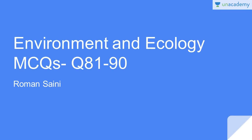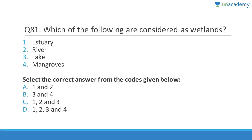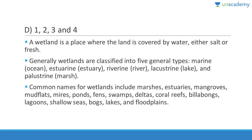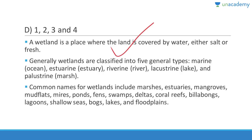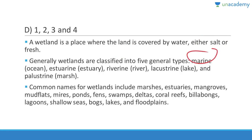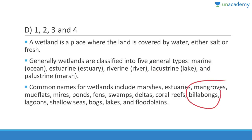Questions 81 to 90. Question 81: Wetlands include estuaries, rivers, lakes, and mangroves. A wetland is a place where land is covered by water, either salt or fresh. There are five types: marine (ocean), estuarine (estuary), riverine (river), lacustrine (lake), and palustrine (marsh). Common names include marshes, mangroves, mud flats, ponds, swamps, deltas, coral reefs, lagoons, bogs, and floodplains.